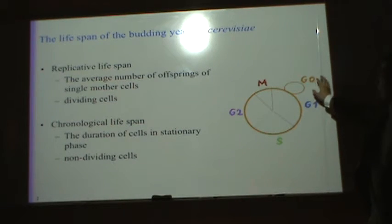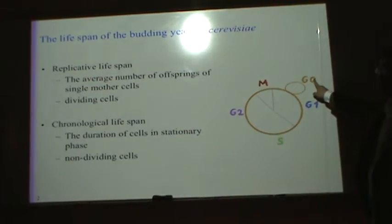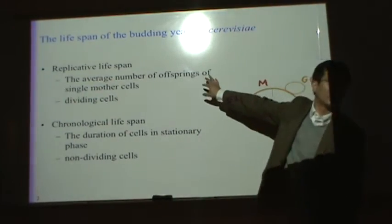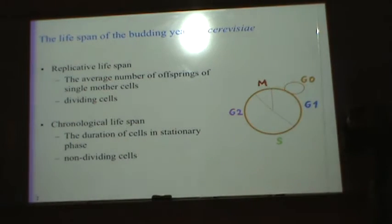And it measures how long cell can still maintain viability in the G zero phase. Oh, okay. So this one, from the chronological lifespan, is the lifespan of the G zero phase, replicative lifespan, the lifespan of the mitotic cell cycle.